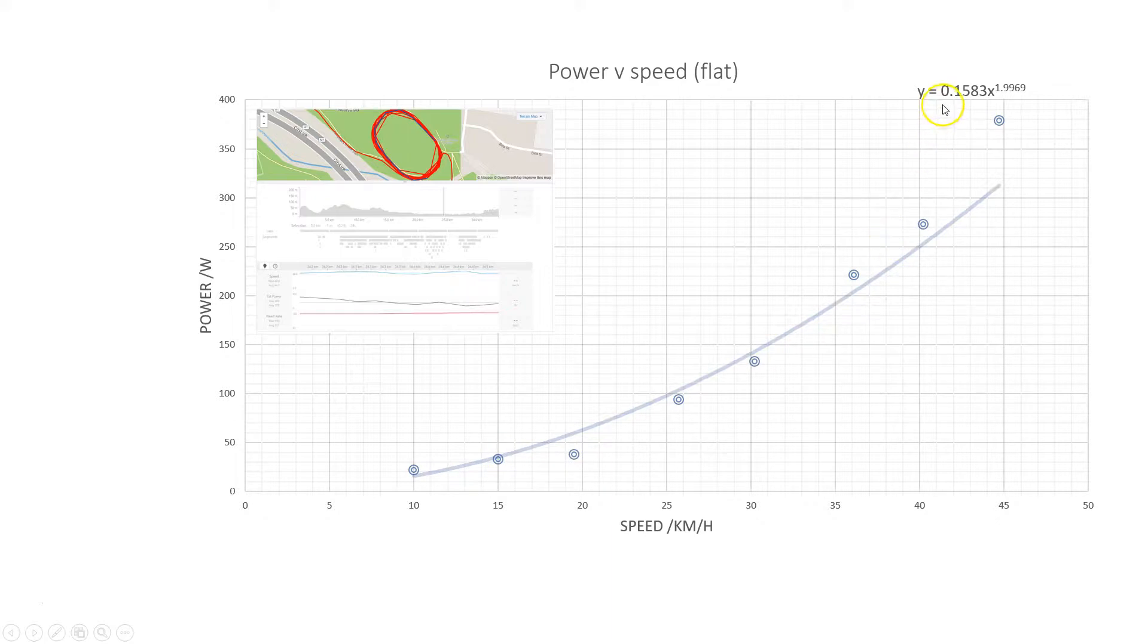There's a reasonable curve like this and in fact Excel suggests that y, i.e. power output, is about 0.16 times by the speed in kilometers per hour squared. So that's a nice formula summarizing how power is calculated by Strava when you're riding on the flat.